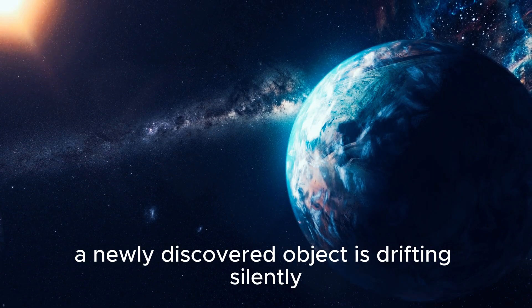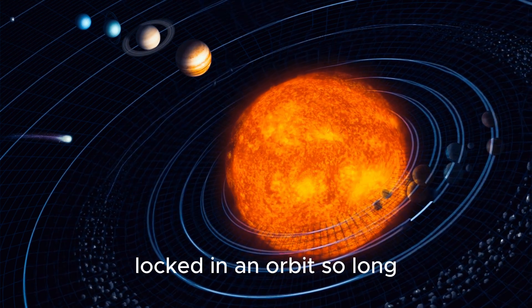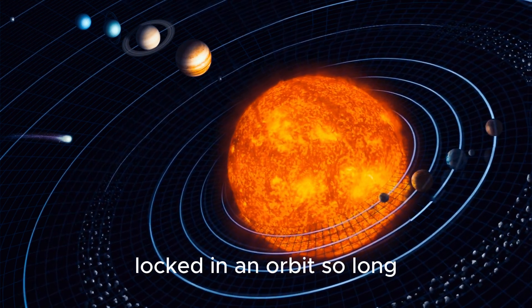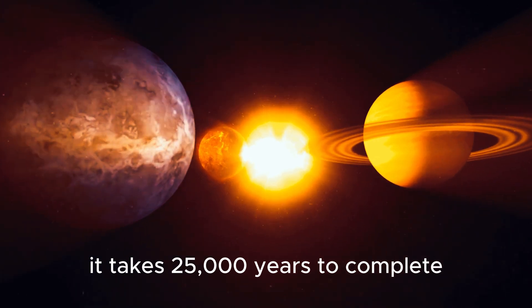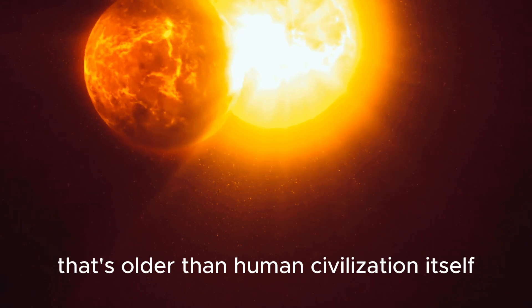A newly discovered object is drifting silently through the outer reaches of our solar system, locked in an orbit so long it takes 25,000 years to complete just one journey around the sun. That's older than human civilization itself.